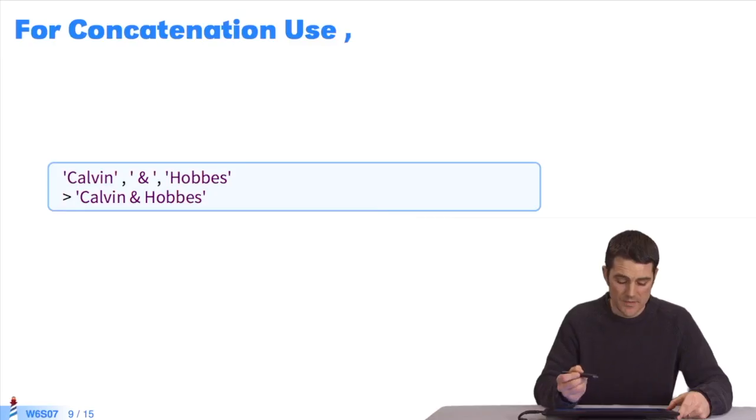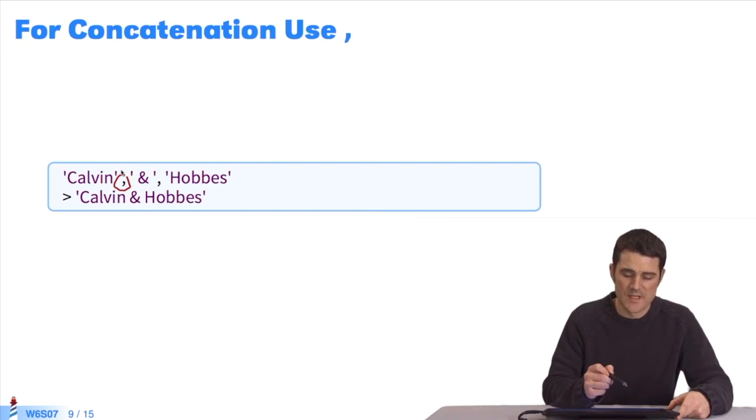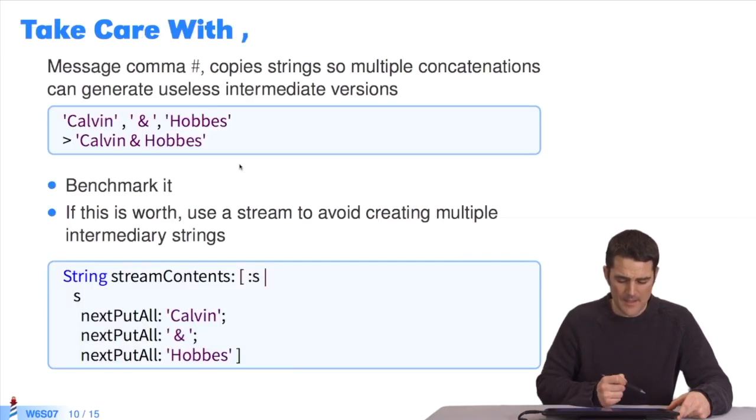For concatenation, you've already seen this, we use the comma message. I send comma to a string and run it through another string to create a new string that is the concatenation of the two. Nonetheless, be careful.